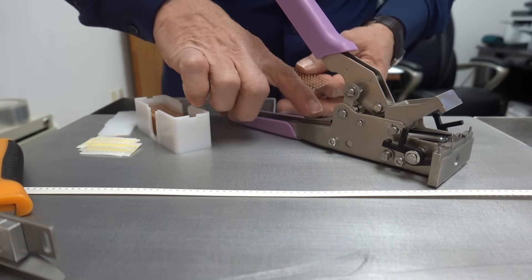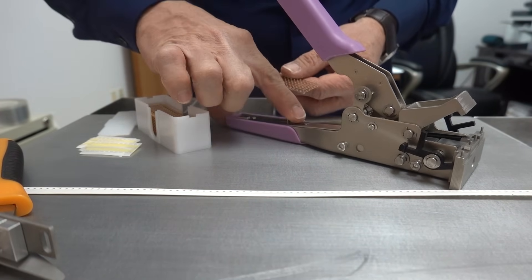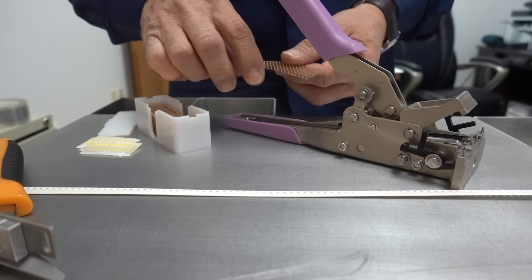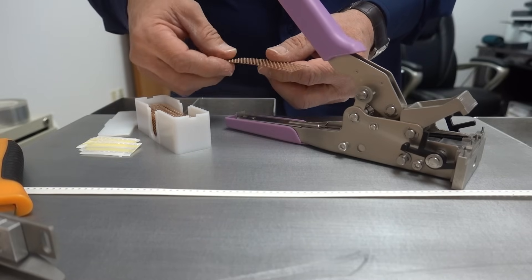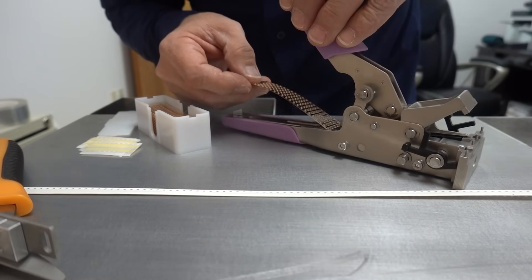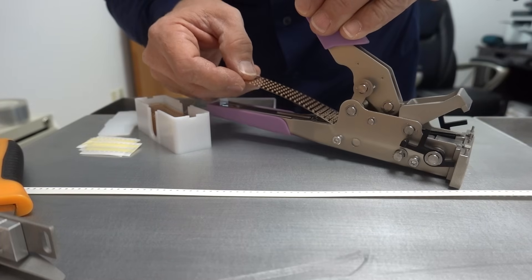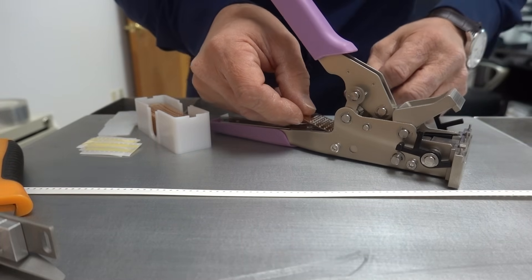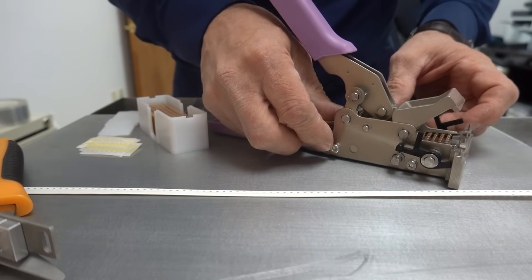You will just pull the little mechanism back on the splice tool and then you will load the cartridge. You will just slide the splice shims into the cartridge.